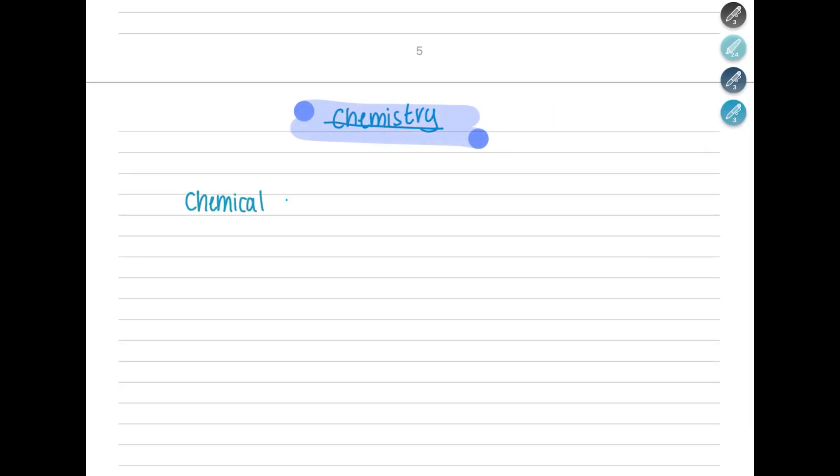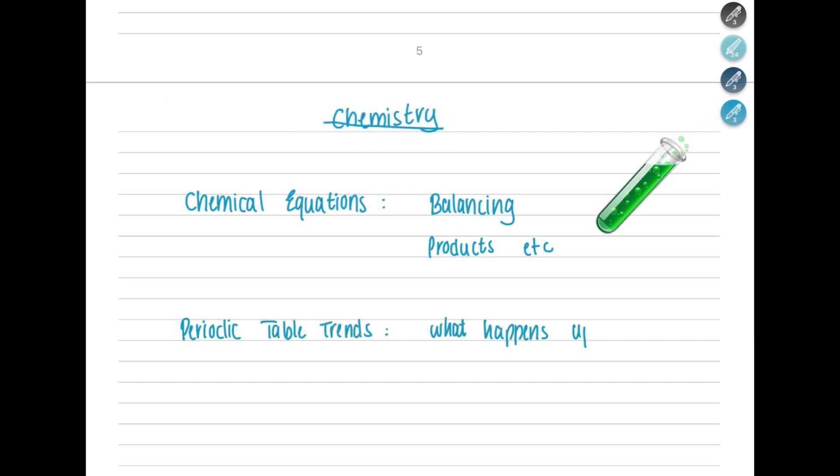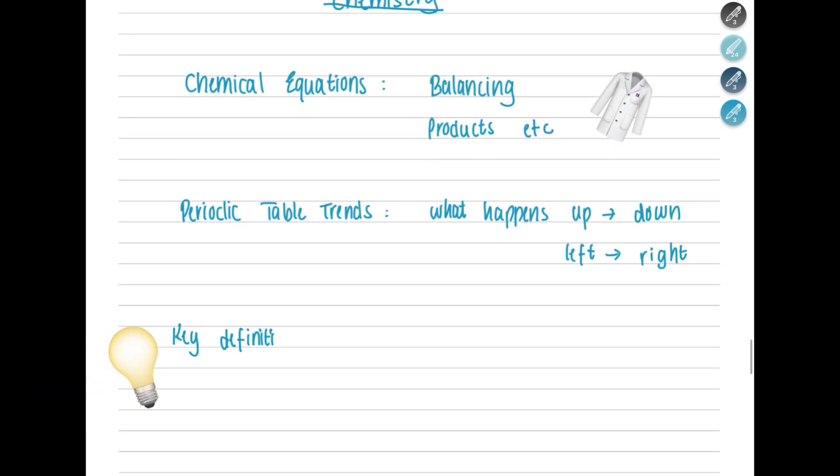Now, we'll start with chemistry. Make sure that you know chemical equations really well. Learn and practice balancing them so you can quickly balance them during the exam. Learn and understand periodic table trends. What happens as you move from left to right or up and down, what is happening to the metallic properties, for example.